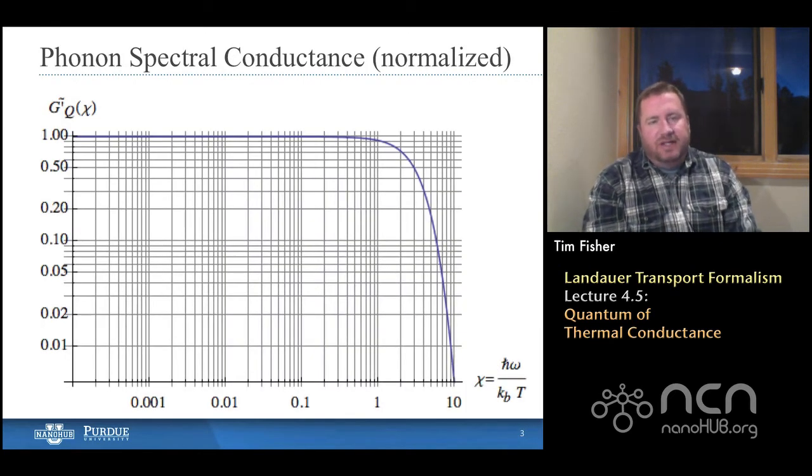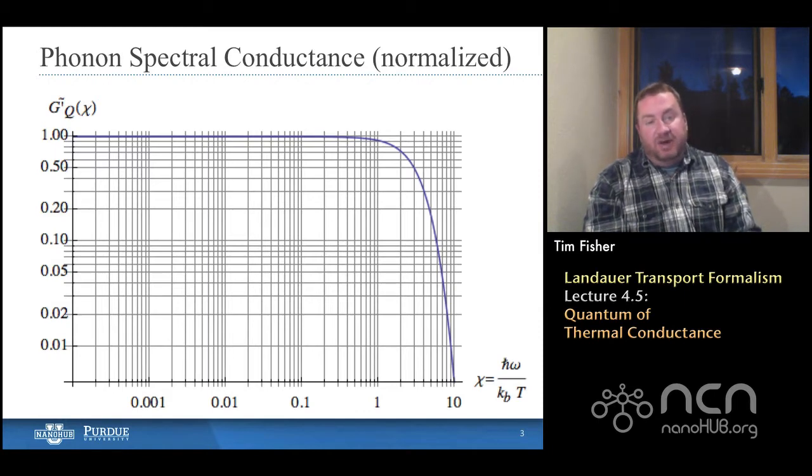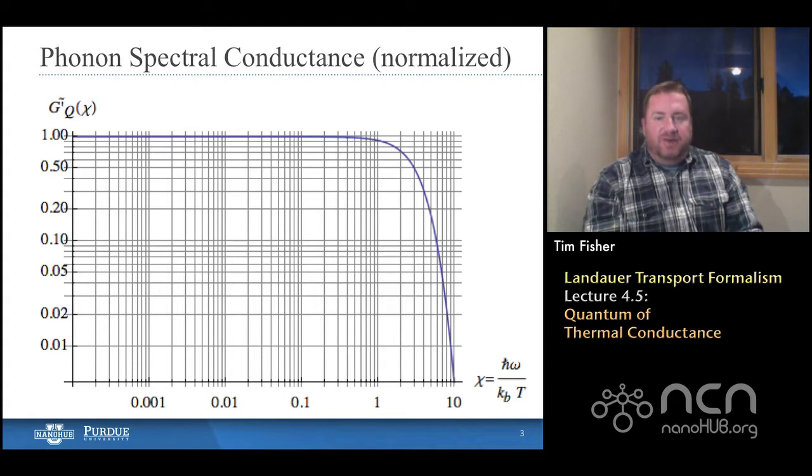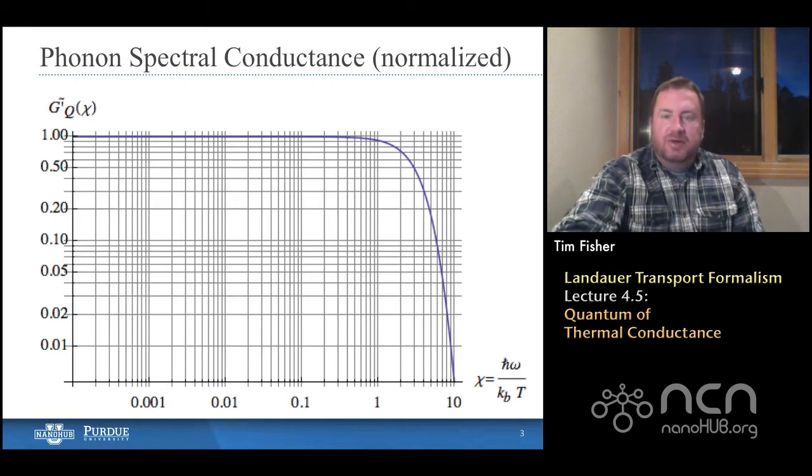There's some slight differences between phonons and electrons. This symbol chi stands for a normalized energy, and we've spoken about that quite a bit so far, but the nice thing is that our normalized spectral conductance is dimensionless. And we showed this graph the last time that we have this normalized conductance that takes a value of 1 for very low energies, and it drops off very rapidly above the thermal energy. And we said in the last lecture that that's a function that we ought to be able to integrate the area under this curve, and indeed, that's what we're going to do today.